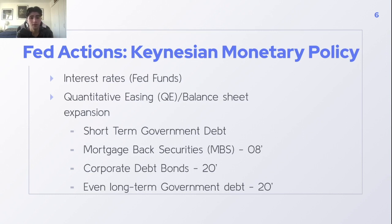The Fed can lower this rate to spur economic growth by encouraging borrowers to spend and borrow more, or raise it to deter borrowing and reduce spending. This has generally been effective in the past — maybe 30 or 40 years ago when rates could go from 12% to 8% or 7.5%. But in today's environment, going from 1.25% to 0% makes little difference.